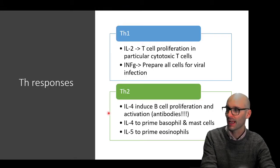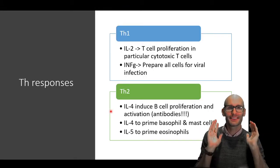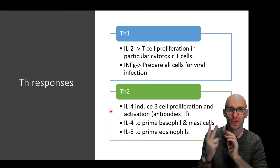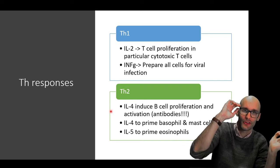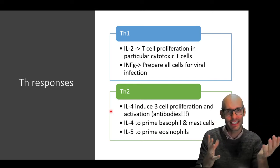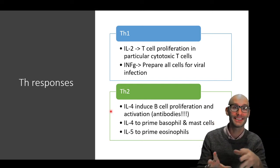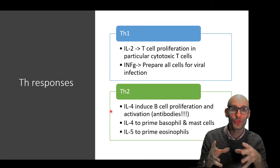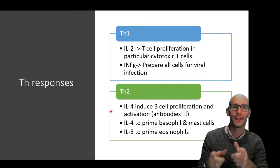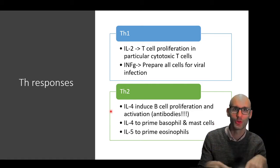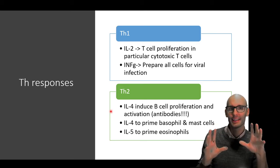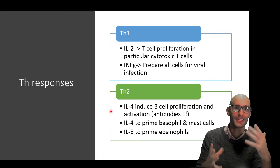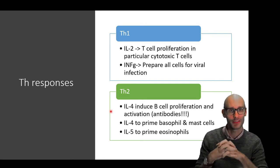First a bit of background, Th1. So Th1 is typified by the production of two cytokines, IL-2, which causes T cell proliferation, in particular cytotoxic T cells, and that's why it's antiviral. Cytotoxic T cells go around and kill cells whose MHC1 is displaying a viral protein or an intracellular bacteria antigen. So the cytotoxic T cells, they're cytotoxic, they go around killing cells that are infected.